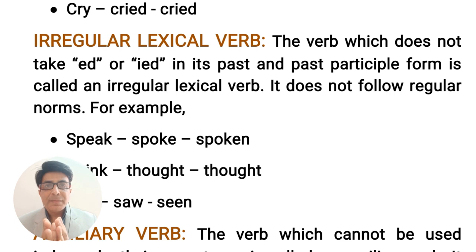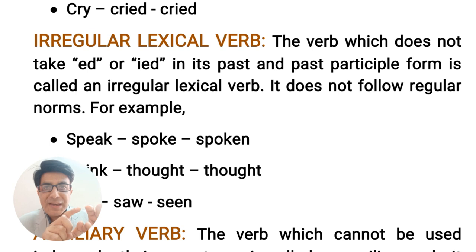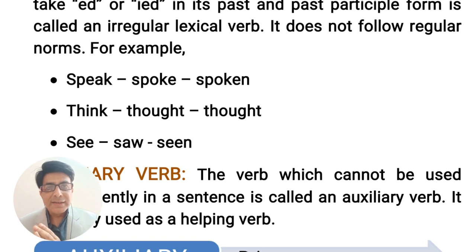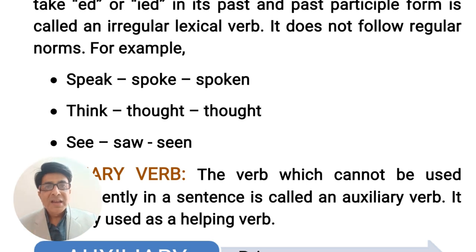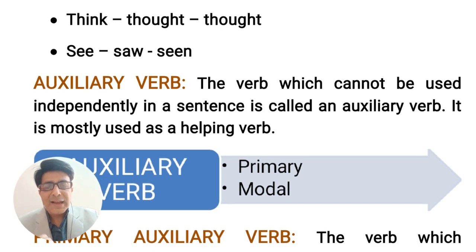For example: speak — the past form is spoke and the past participle is spoken. So all three forms of this main verb speak are different. In the same manner: think, thought, thought — the last two forms are similar. See, saw, seen — all three forms are different. That's why these verbs are known as irregular lexical verbs. So verbs can be divided into lexical verbs, meaning the main verbs, and auxiliary verbs. Auxiliary means helping verbs.